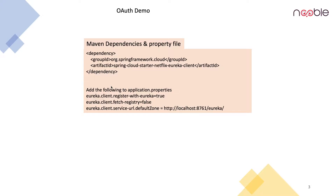Now for the auth demo microservice, all we have to do is add the dependency to the POM file and set these properties in application.properties, where I am setting the default zone to localhost:8761. Port 8761 is the default port of the Eureka server — even if you don't specify it, it will pick it up — but let us be explicit and specify the port number.